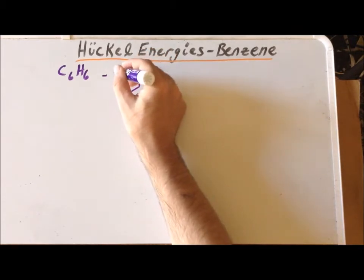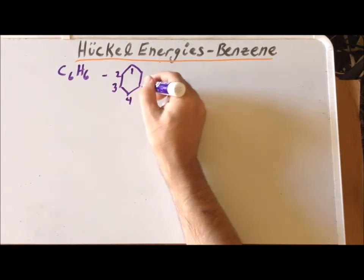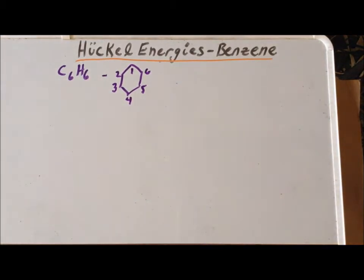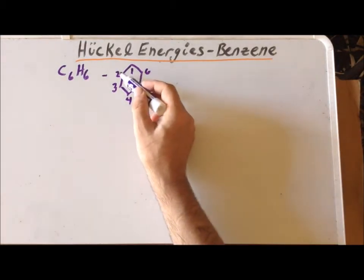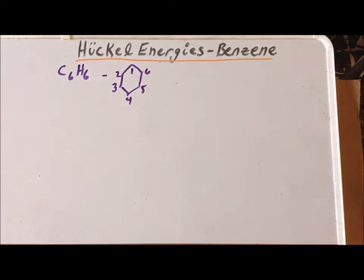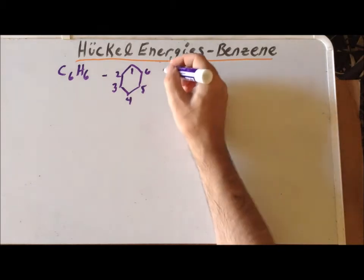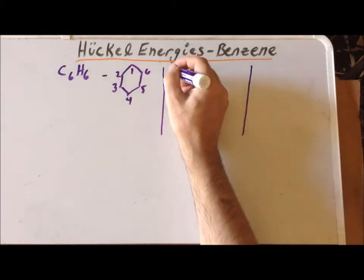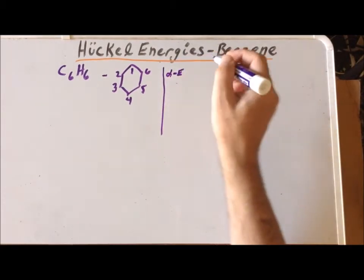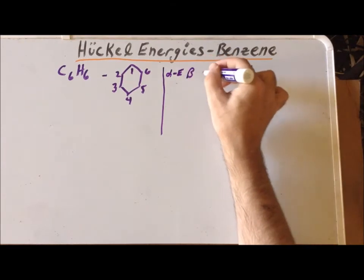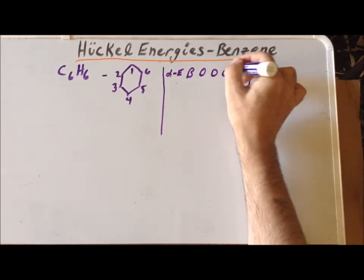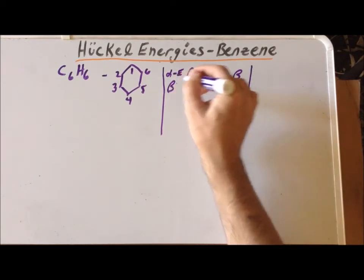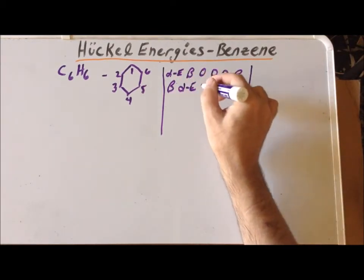We can number the carbon atoms. In this particular molecule, carbon 1 is connected to 2, 2 is connected to 3, and so on, forming this six-membered ring — a structure which was first elucidated by August Kekulé. The secular determinant that we have to solve for this particular system is a six-by-six determinant.